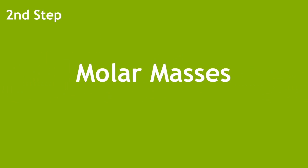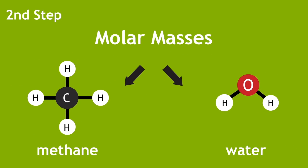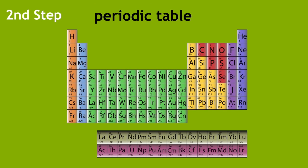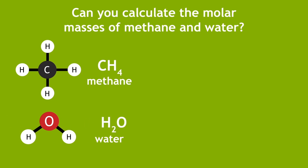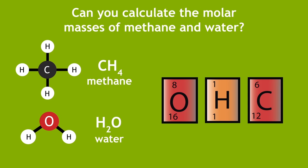The second step is to calculate the molar masses of methane and water. This is done by using the periodic table. Can you calculate the molar masses for methane, CH4, and water, H2O? Pause, write these down, and continue when ready.